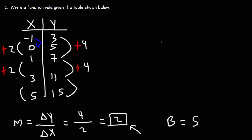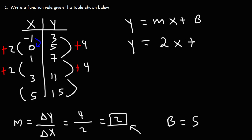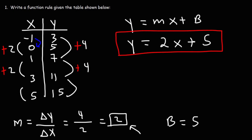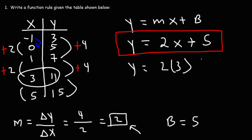Now we can write an equation using this formula. m is two and b is five, so y is equal to two x plus five. We can check it: if we plug in x equals three, we get a y value of eleven — two times three plus five equals eleven. That confirms the function works.